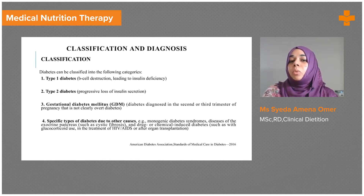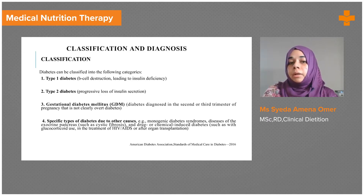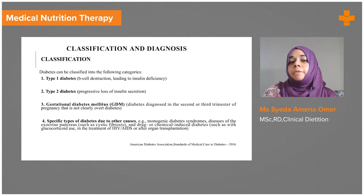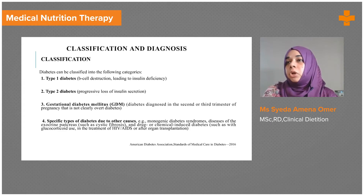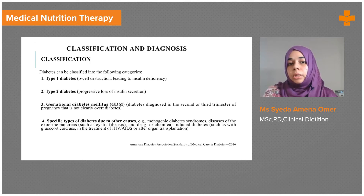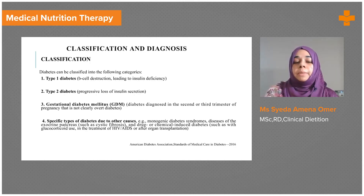Type 1 diabetes is mostly because of B cell destruction. This is found in younger kids from birth itself and it can lead to insulin insufficiency or deficiency. Their pancreas is incapable of producing insulin, which helps in the metabolism and absorption of glucose.